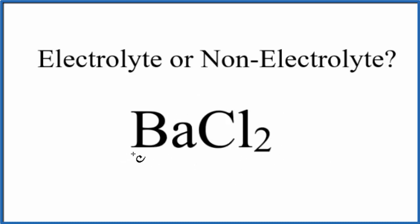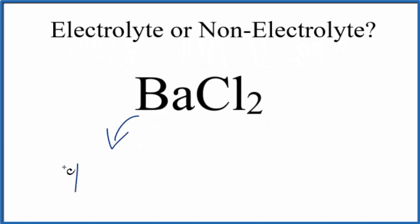Since barium is in group 2 on the periodic table, it'll break apart to form the barium 2+ ion. Chlorine is in group 17, sometimes called 7A, so it'll form the chloride ion, Cl⁻.